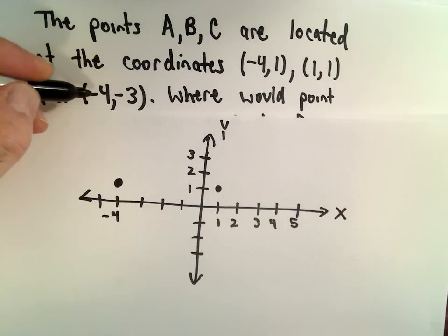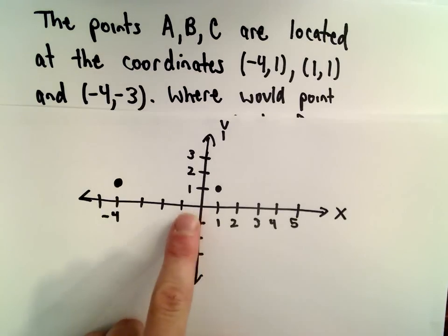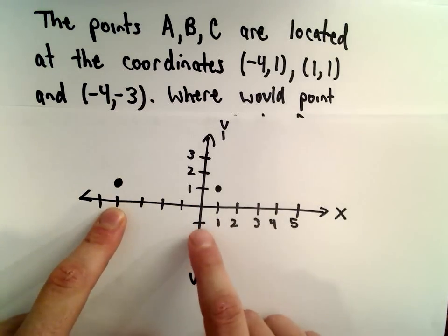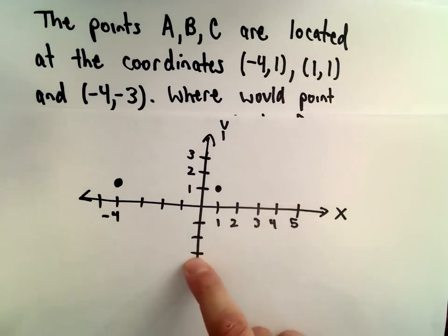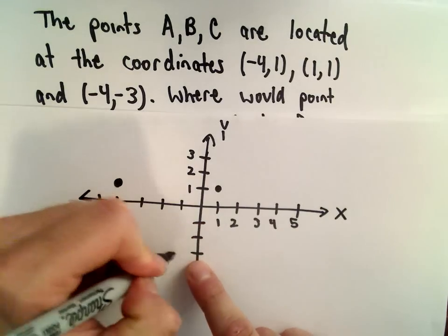And then we've got (-4, -3). If we go to the left 4 units—1, 2, 3, 4—then we'll go down 3 units—1, 2, 3. So there's (-4, -3).